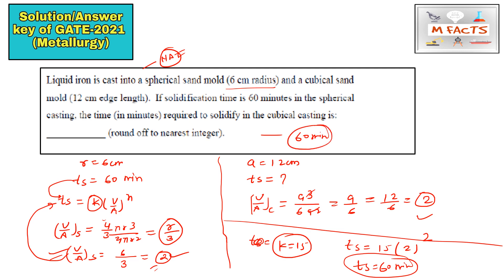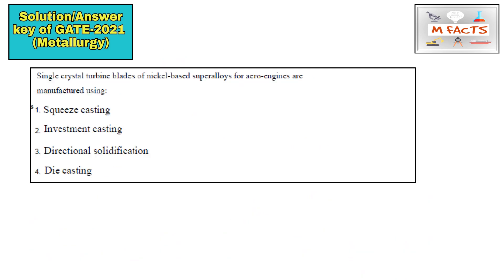The next question: single crystal turbine blades of nickel-based superalloys for aero engines are manufactured by which process? Whenever they talk about single crystals for turbine blades — whether nickel-based, cobalt-based, or iron-based superalloys — these are all manufactured using directional solidification. So option C (directional solidification) is the correct answer.